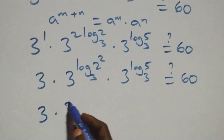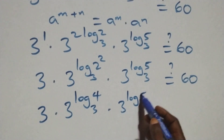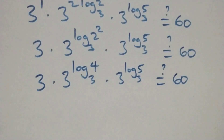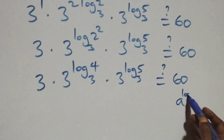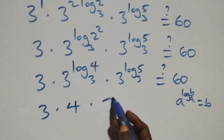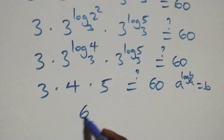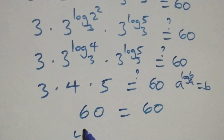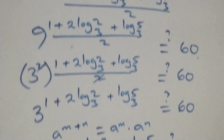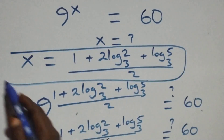This follows the law of logarithms: a raised to the power log_a(b) equals b. So we have 3 times 4 times 5, which equals 60 on the left-hand side. Therefore, we conclude that x equals (1 plus 2·log₃2 plus log₃5) all over 2 satisfies the given problem.